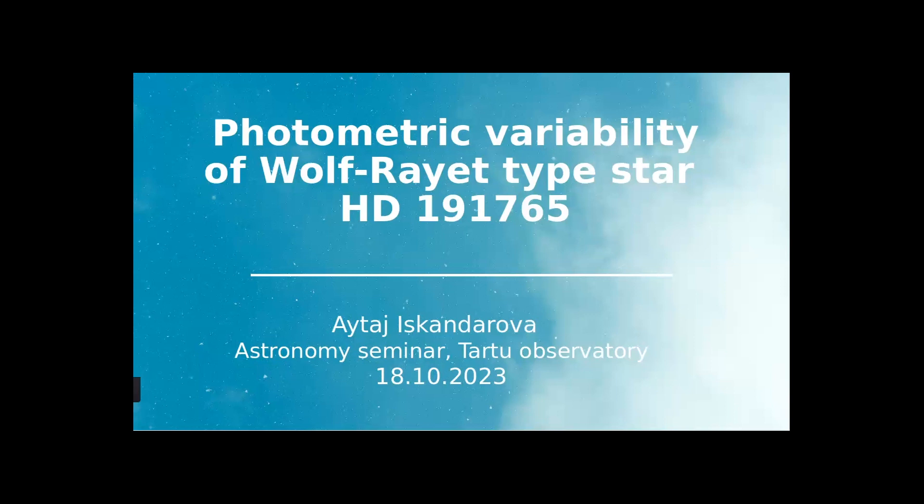Thank you. Hi everybody. Today I'm going to talk about the photometric variability of Wolf-Rayet type HD 197065 star. Note that this is the serial number of this star in the Henry Draper catalog. In the catalog of Wolf-Rayet type stars, this star is called WR 134. We use images obtained using the CCD photometer of the 60-centimeter telescope of Shamakha Astrophysical Observatory under the guidance of my supervisor.